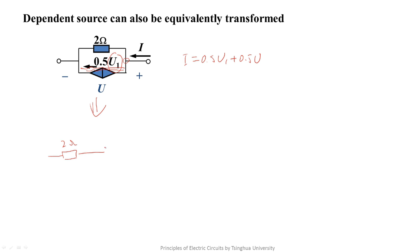This is a controlled voltage source, whose direction should be left positive and right negative, corresponding to this current direction. Its value is a product of these two, so it should be U1.